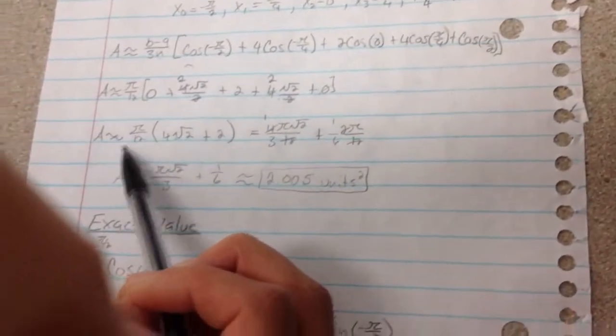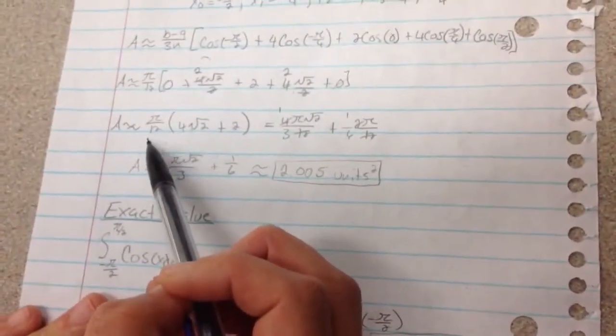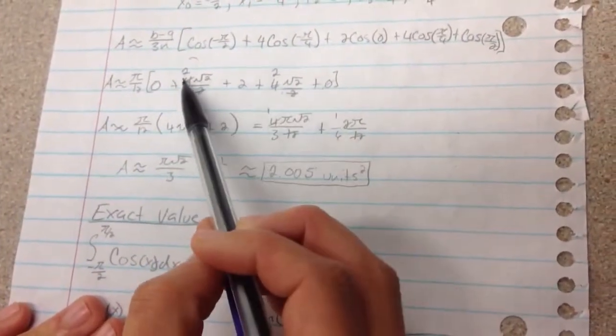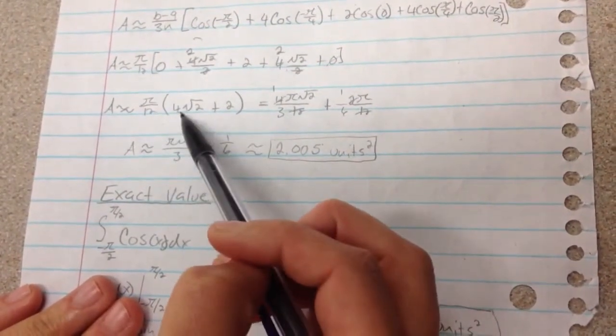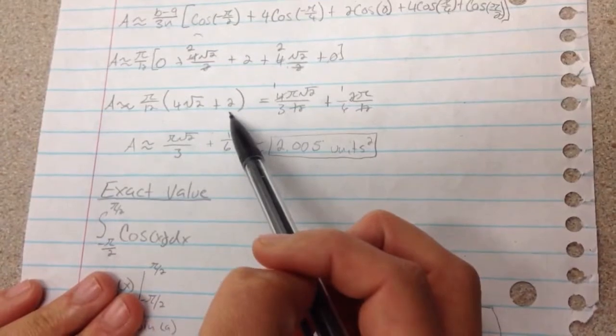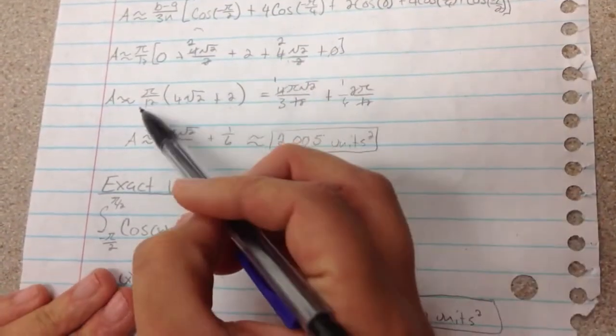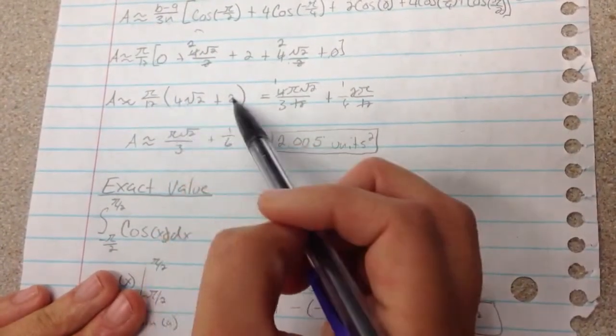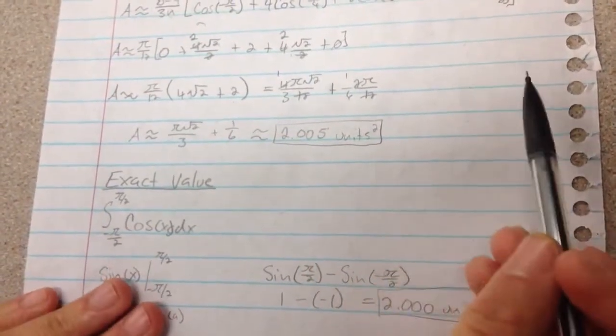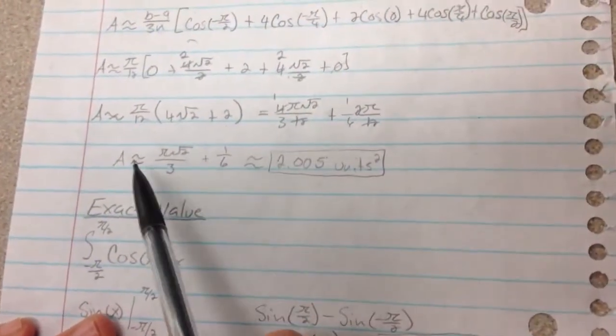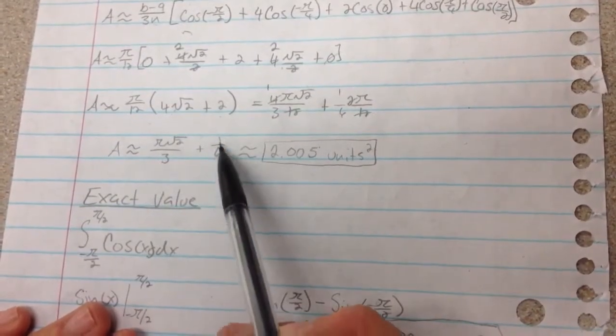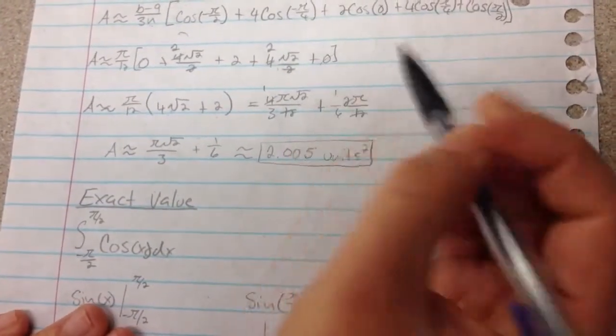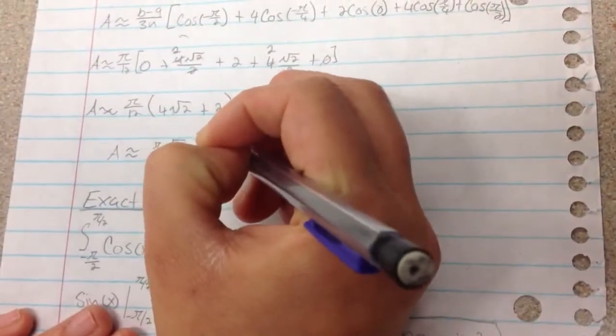So your area approximates to pi over 12 times, you've got 2 terms of 2 root 2, so 4 root 2 plus 2. So what I did is I just distributed out and then simplified. So I was left with area approximates to pi root 2 over 3 plus pi over 6.